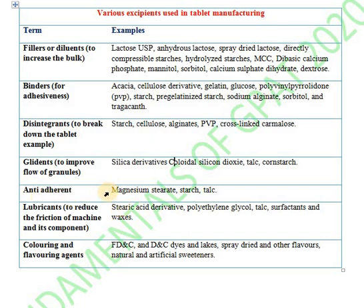Next are anti-adherents. Anti-adherents are used to prevent the adherence of powder particles. Examples include magnesium stearate, different types of stearates, starches, and talc.